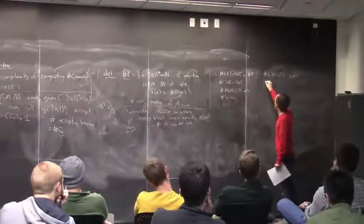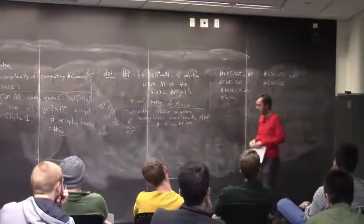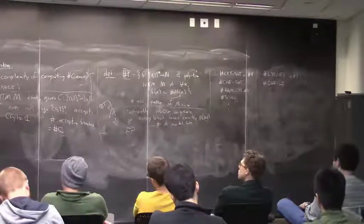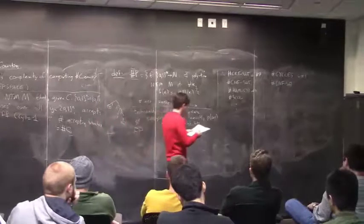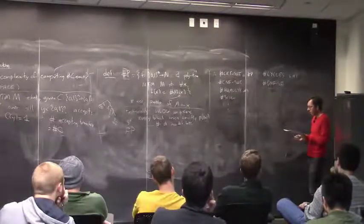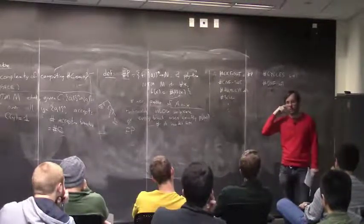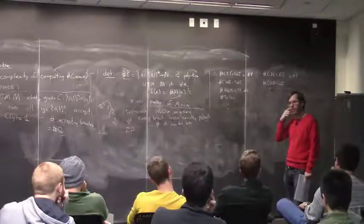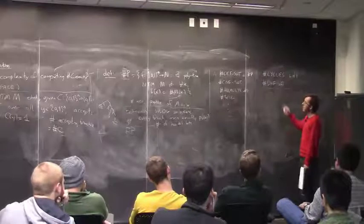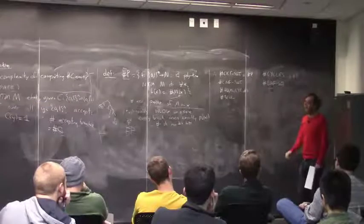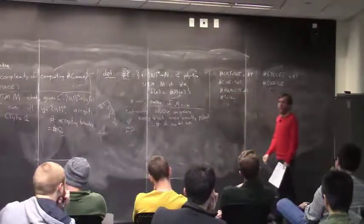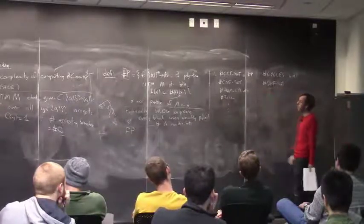Here's an even more striking example: sharp DNF SAT. You're given a DNF formula — an OR of ANDs of literals — and you want to know how many satisfying assignments it has. The decision problem for DNF is trivial — a DNF is always satisfiable unless it's empty. But the counting problem is essentially equally hard as sharp CNF SAT — both are complete for sharp P. So this is an example where the counting problem is as hard as any counting problem in sharp P, but the decision problem is trivial.